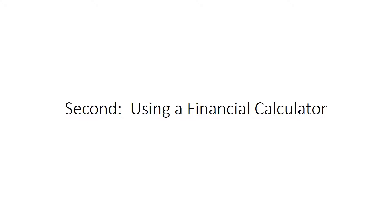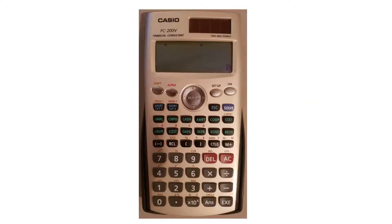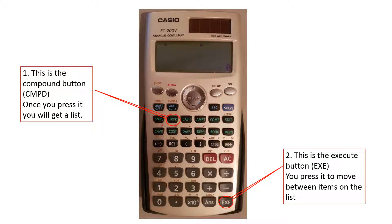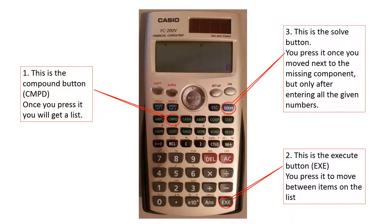The second part of this video is about using the financial calculator. Let me show you a picture of my financial calculator and the keys I'll be using. First, the CMPD key — the compound button — which brings up a list. Second, the EXE button — the execute button — which you press to move between items on the list. Finally, the SOLVE button, which you press once you've moved next to the missing component, after entering all the given numbers.